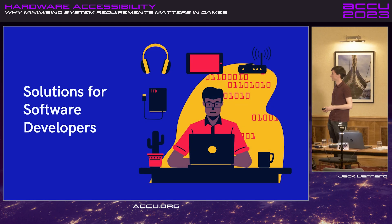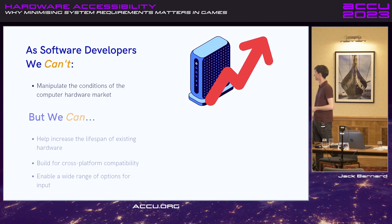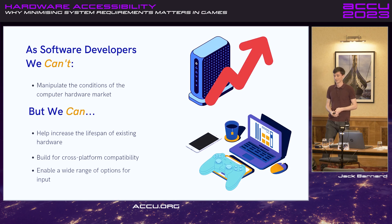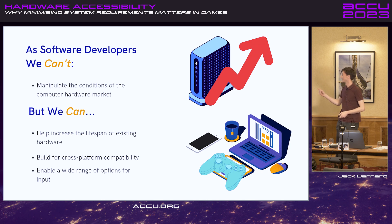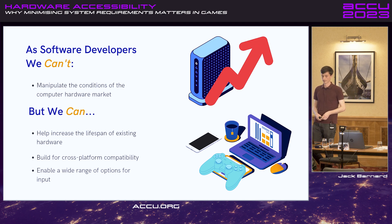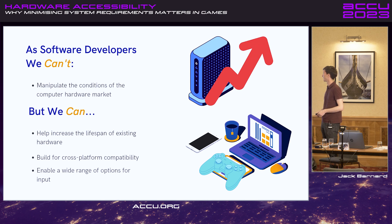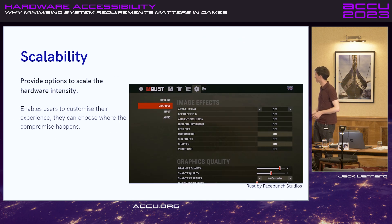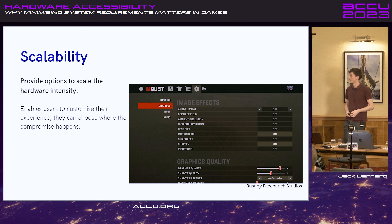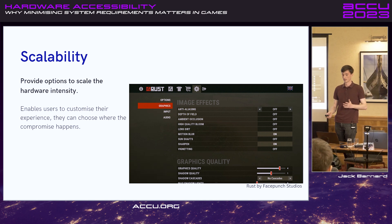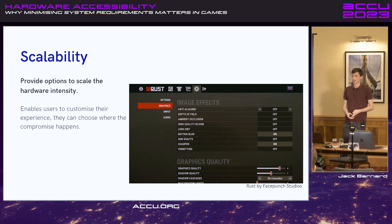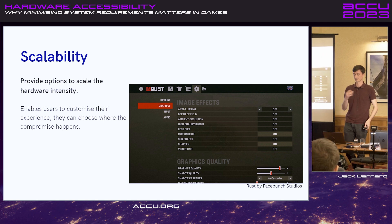Going forward, what can we do as software developers to help correct this problem? We can't manipulate the hardware market — we can't make graphics cards more available or cheaper — but we can work on increasing the lifespan of existing hardware by building our software for it. One thing we can do is scalability: providing options to scale the hardware intensity of games, toggling graphics settings, toggling off post-processing effects and so on.